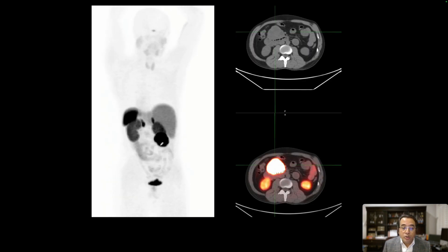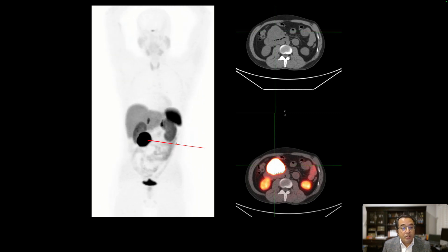The rotating image shows that there is intense uptake in the mass, and the rest of the scan shows that there is no evidence of metastatic disease. There is physiologic uptake in the pituitary, spleen, liver, adrenals, and excretion from the kidneys into the urinary bladder.